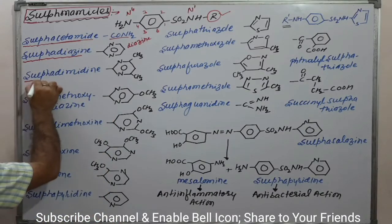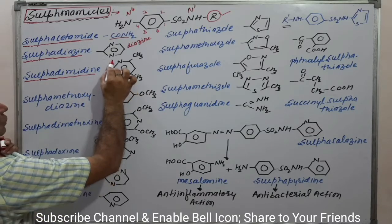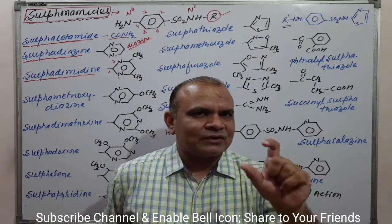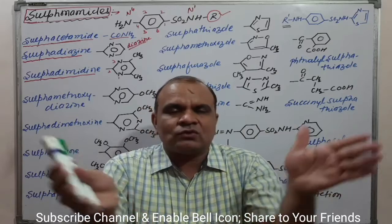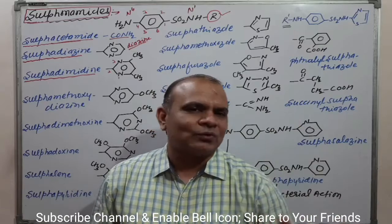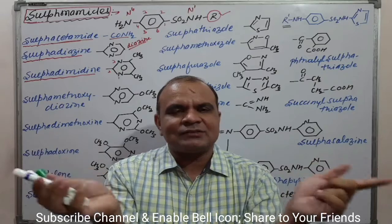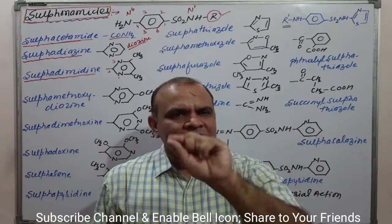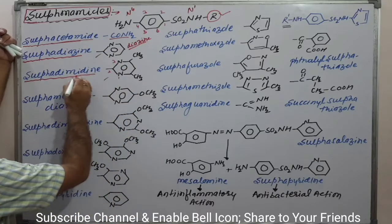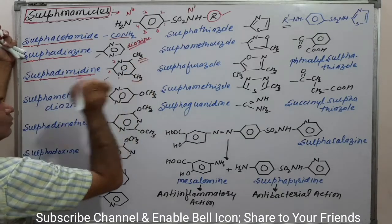Next is sulphadimidine. 'Dimidine' again refers to a diazine ring, but with different nitrogen positions — 1,2 or 1,3 or 1,4. When the two nitrogens are at 1,3 positions in a 6-membered ring, that is pyrimidine. Sulphadimidine contains a pyrimidine ring system, and you can also note a methyl group is present on the ring.